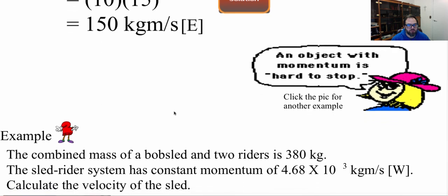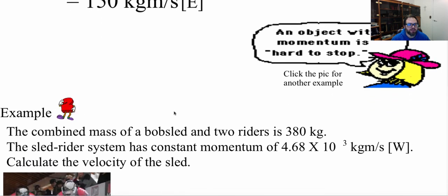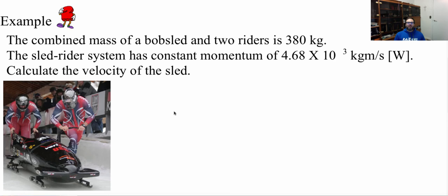Now let's take a look at number two here. So here's my next example. The combined mass of a bobsled and two riders is 380 kilograms. The sled rider system consists of a momentum of 4.68 times 10 to the 3 kilograms meters per second.